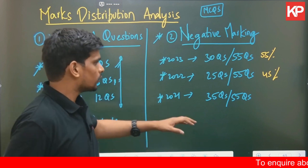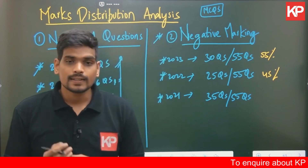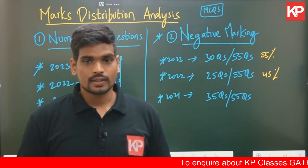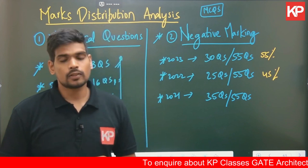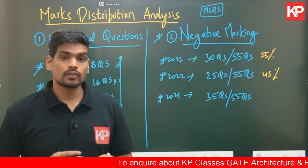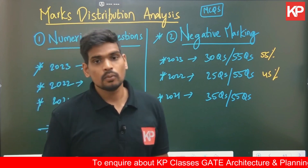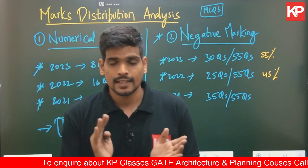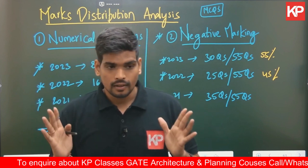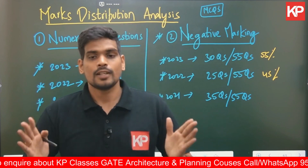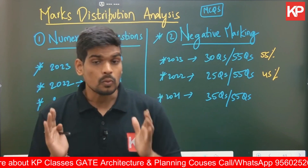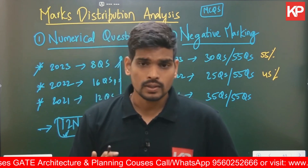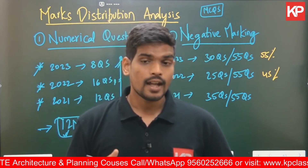Looking at the past three years, 2021 had the highest number of questions with negative marking. Negative marking based questions have slightly declined, but the average is still maintained. Do not think the question paper is getting more difficult or undergoing a major structural shift, or that numerical-based questions are being reduced or removed. No such major changes are happening — all changes are range-bound deviations only, as seen in the GATE paper. This is a brief idea on the marks distribution.